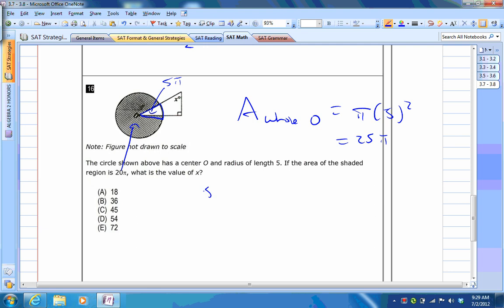So that means 5 pi over 25 pi is 1 fifth. So the sector is 1 fifth of the whole circle. Remember that's called a sector, whenever you have a portion of a circle. That means that the angle, because the whole circle is 360 degrees, right? So you just use proportions here. You don't need any formulas, just know the proportions. That's 72 degrees.